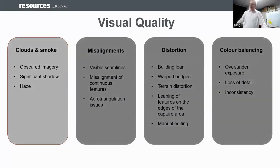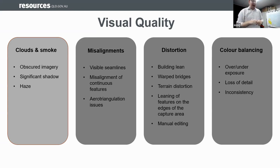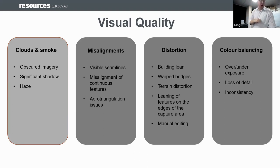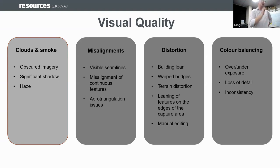In visual quality we typically look across four domains: clouds and smoke obscuring or causing shadows; misalignments or scene lines where something just doesn't line up; aero-triangulation issues — where stitching multiple camera photos together causes distortions, warped bridges, or terrain distortions; and color balancing — whether it's over- or under-exposed, has lost detail, or is inconsistent. A classic example is water replication, where a patch of water gets copy-pasted 20 times, resulting in something like 60 whales appearing off Double Island Point.